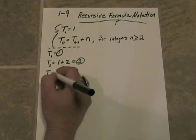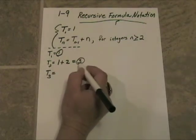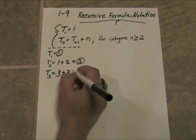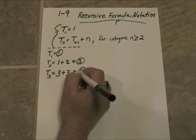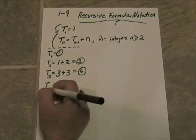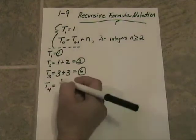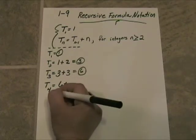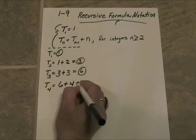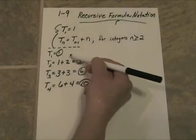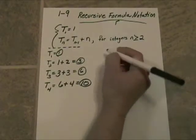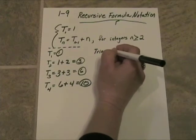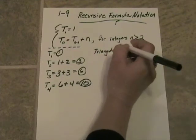Alright, now t sub 3 would be the preceding value, which was 3, plus n, which is 3, and that's going to give me 6. t sub 4 would be the value of t sub 3, which is 6, plus n, which is 4, which gives me 10. Take a look at it. This is the triangle number sequence, okay? Triangular numbers.